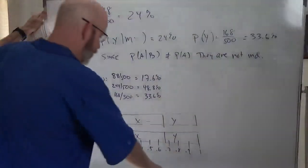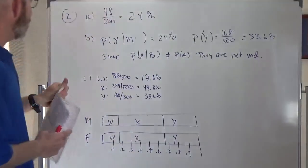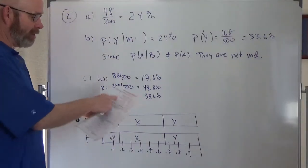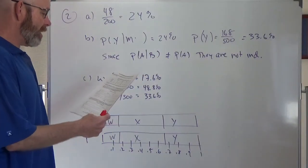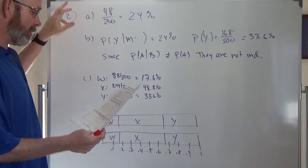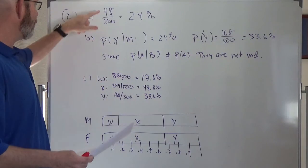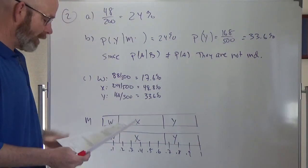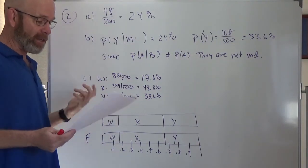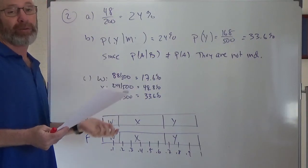And then problem number two. Some pretty straightforward stuff. We've got a little chart. The first question was just a conditional probability question. It was probability of, given that they're male, party Y, 48 over 200, 24%. And then it asks the next question, are they independent? So are male unregistered and party Y independent?